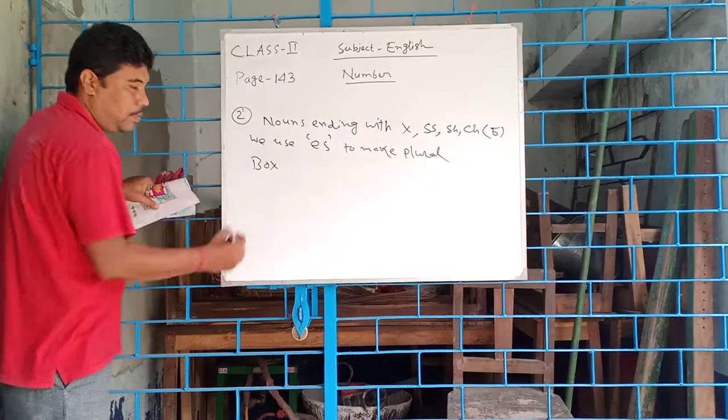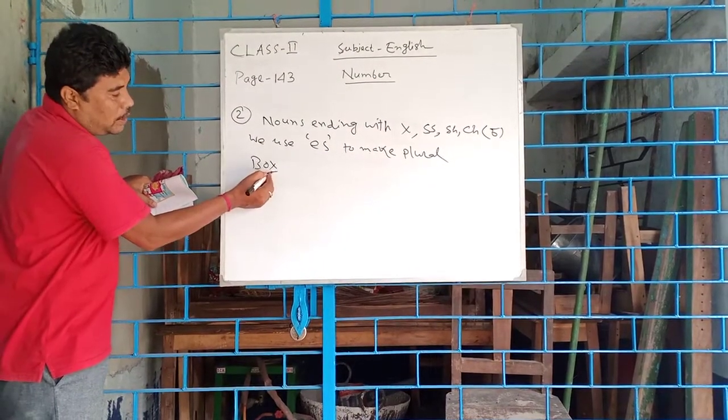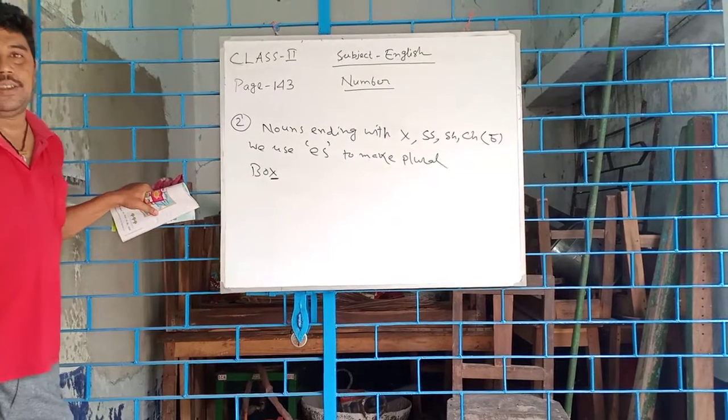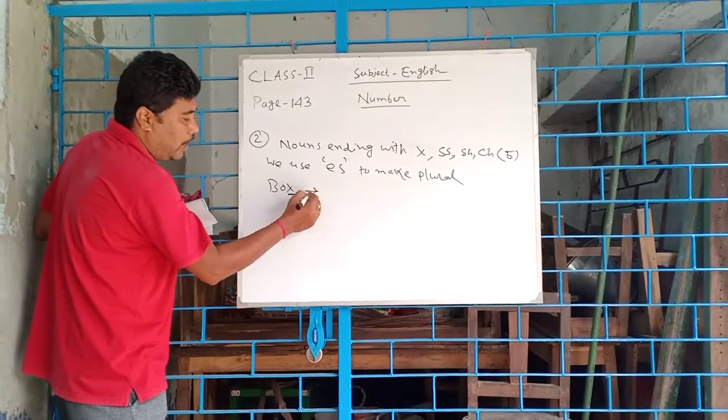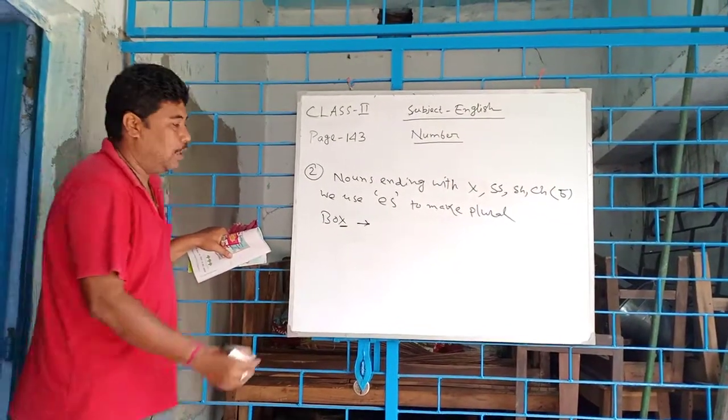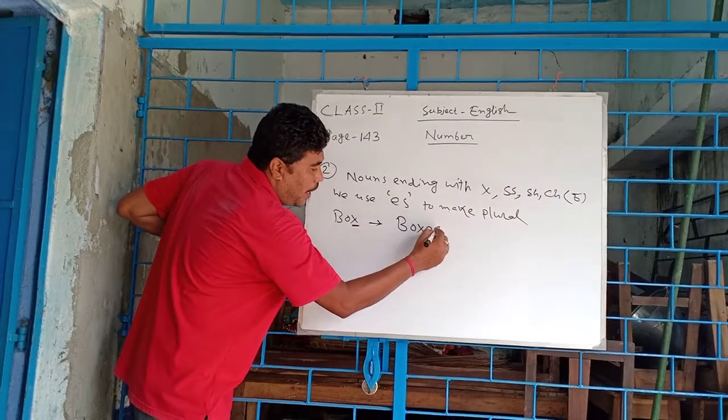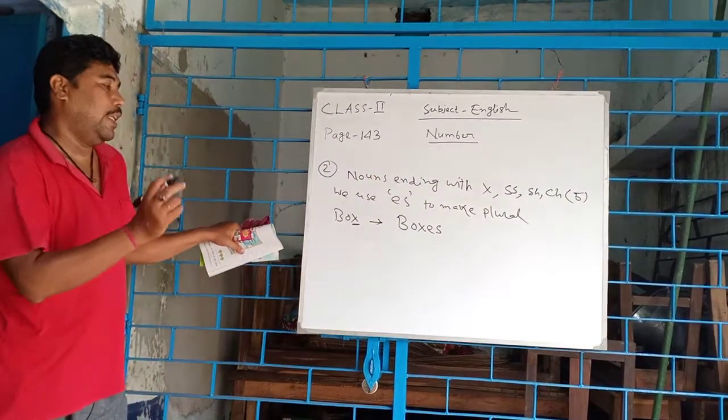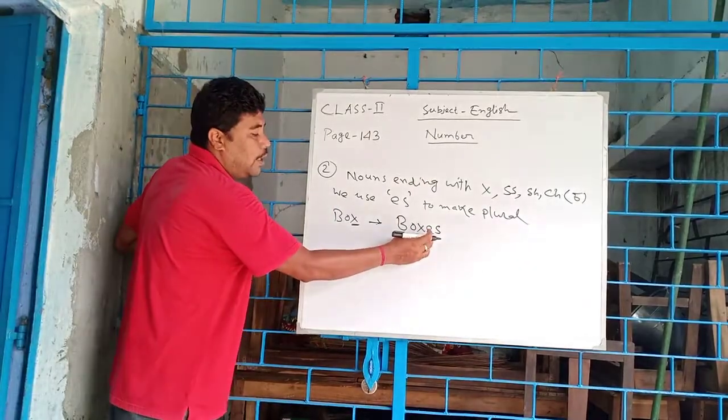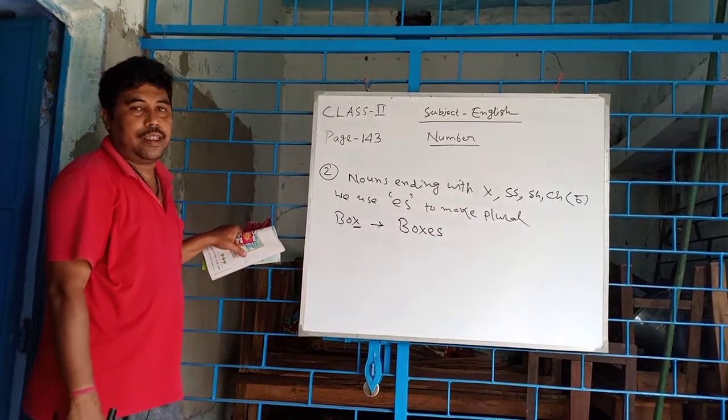For example, box. Here you see the last alphabet is X. Therefore, when you transform it to plural number, we use box and add ES. We use ES at the end of the X. That is boxes.